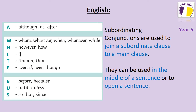As we have been using subordinating conjunctions in our writing, we are going to be recapping how to use them and the different ways that you can use them in your sentences. A subordinating conjunction is used to join a subordinate clause to a main clause. They can be used in the middle of a sentence to join both clauses, or to open a sentence so they are joining it to another sentence.